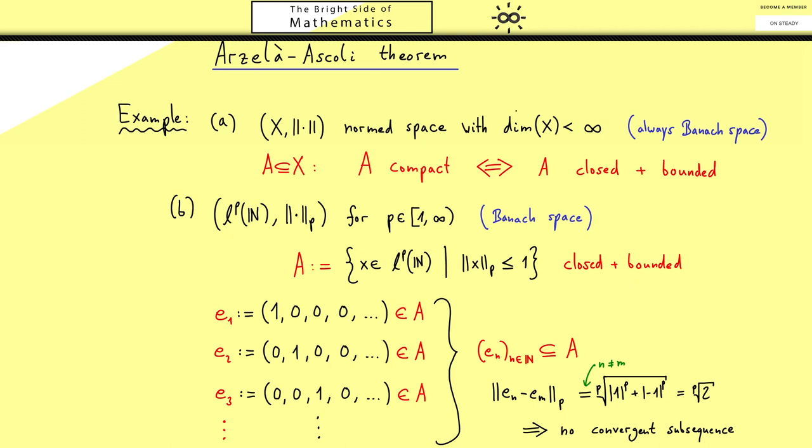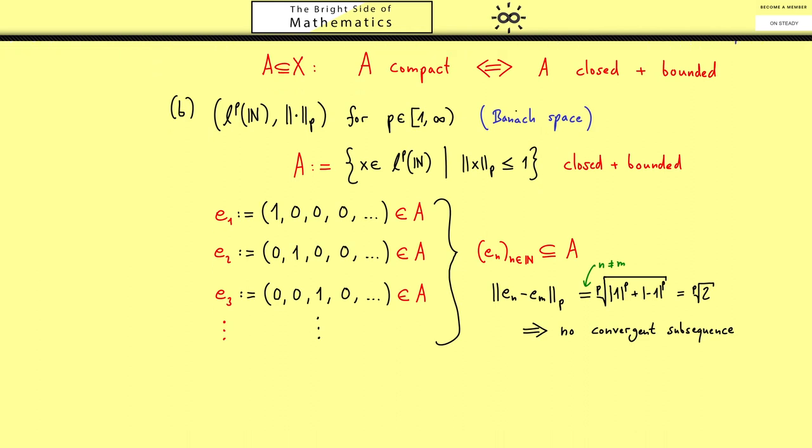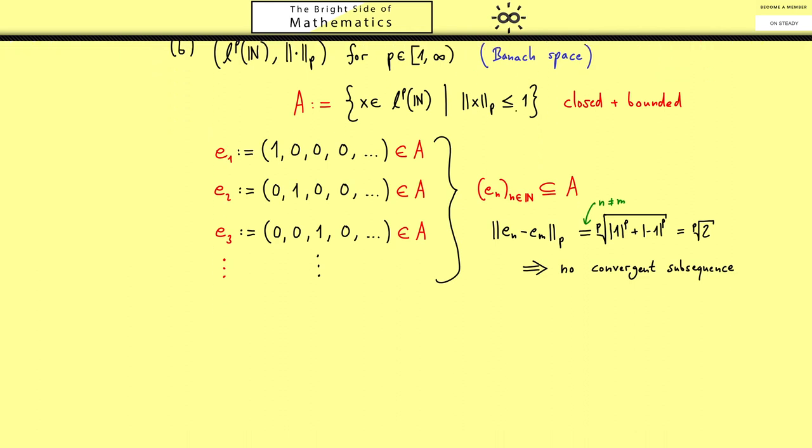This then tells us for an infinite dimensional Banach space being closed and bounded is never enough for being compact. The Arzela-Ascoli theorem now tells us which information we have to add for the Banach space given by the continuous functions. So let's look at the continuous functions defined on the unit interval together with the supremum norm. Which is of course defined as the supremum over all possible outcomes measured in the absolute value.